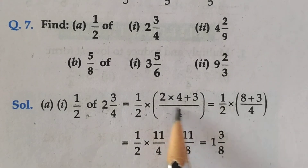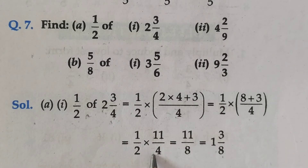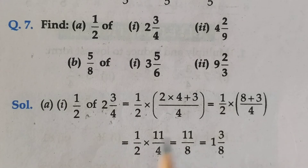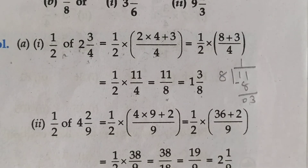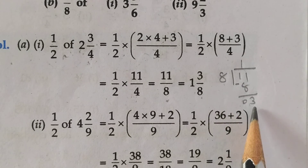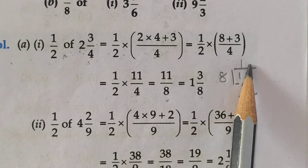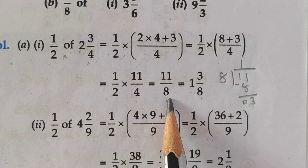So 1 upon 2 multiplied by 11 upon 4. Now 2 twos are 4 — simplify: 11 upon 8. Now students, this is an improper fraction; convert it into a mixed fraction. 11 upon 8: 8 ones are 8, 11 minus 8 is 3. So the quotient is 1 — write down as whole number. Remainder 3 in the numerator, and divisor 8 as it is. The answer is 1 whole 3 upon 8.